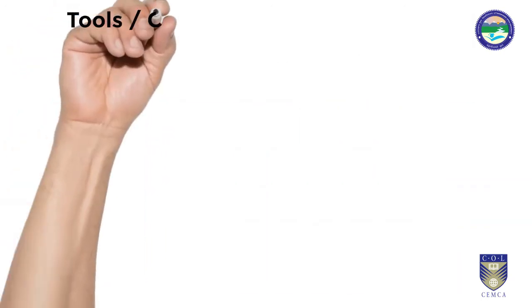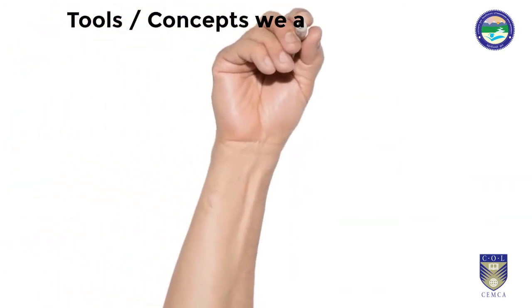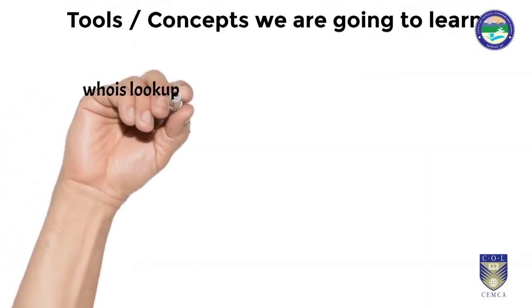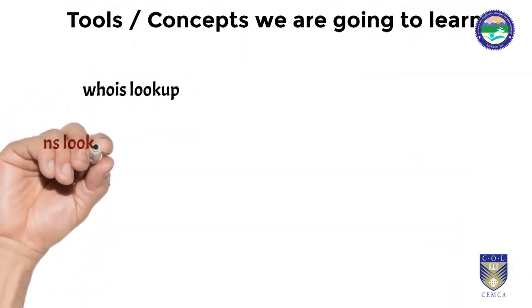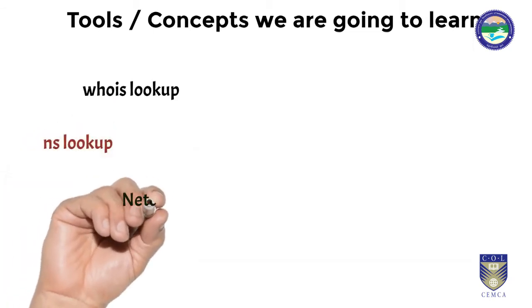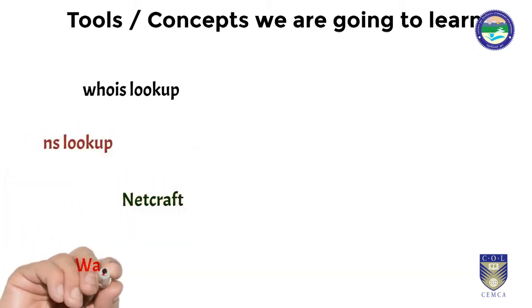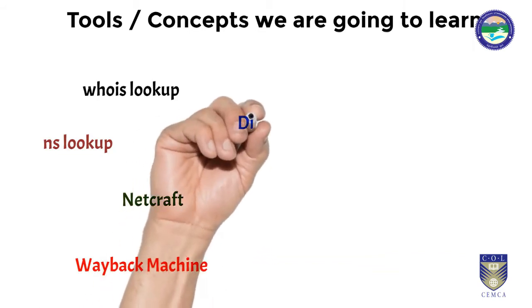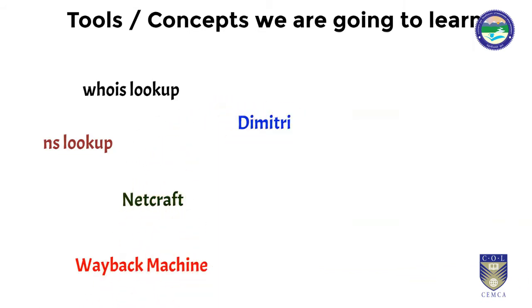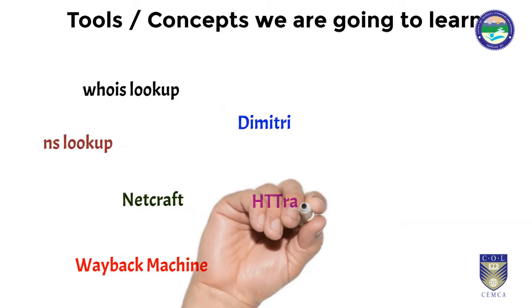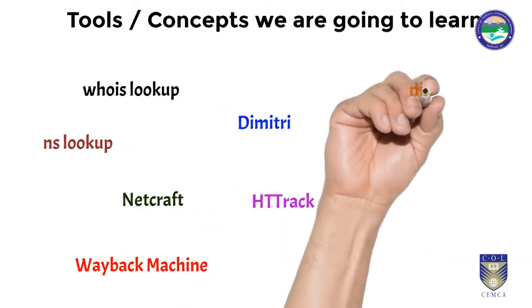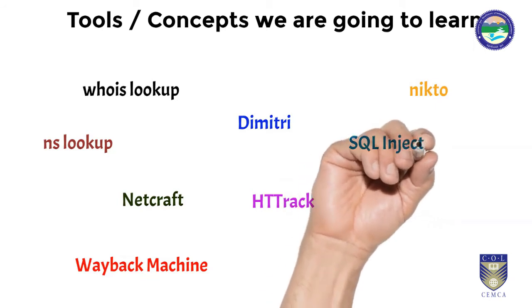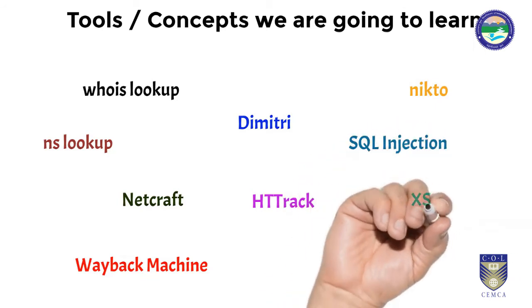We are going to start with the very first section: website pen testing — information gathering. After we have gathered a lot of information about a particular victim, we will shortlist our tools and toolkits as an attacker, thinking from that point of view, and then launch our attack specific to the particular vulnerability found in the information gathering phase.